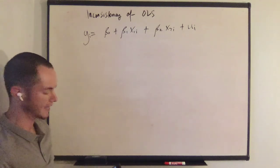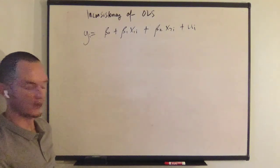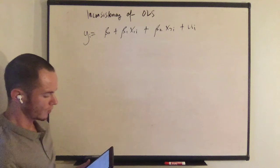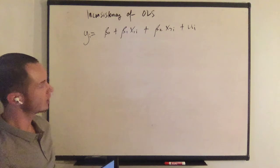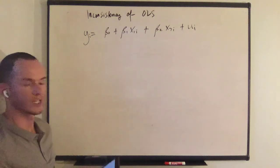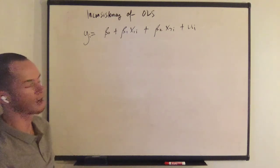Assume that this model satisfies the first four Gauss-Markov assumptions so that v has a zero mean and is uncorrelated with x1 and x2. So the estimators are unbiased.